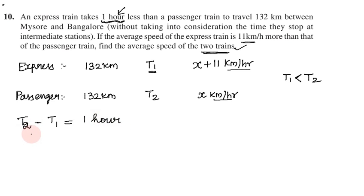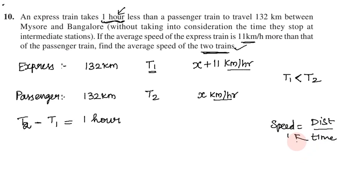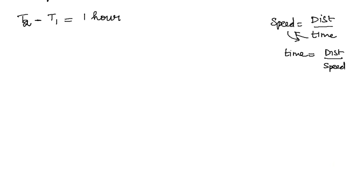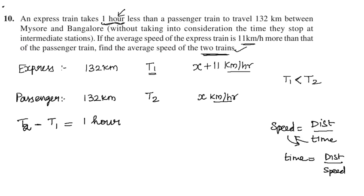We use the speed formula: speed is equal to distance divided by time taken. Therefore, time is equal to distance divided by speed.